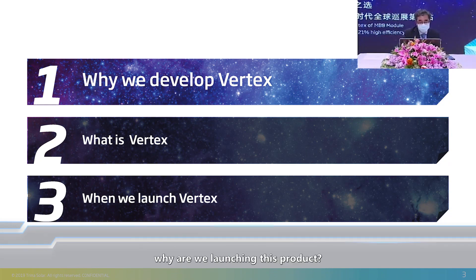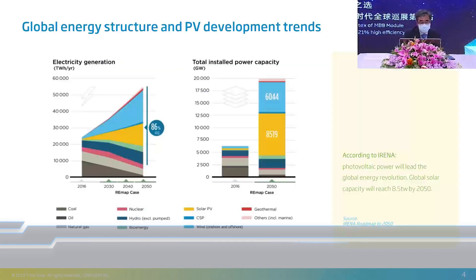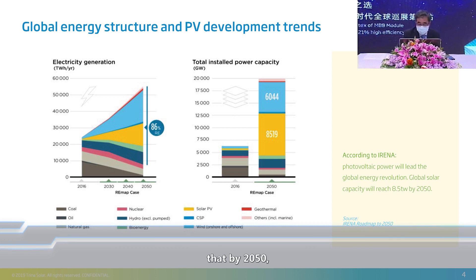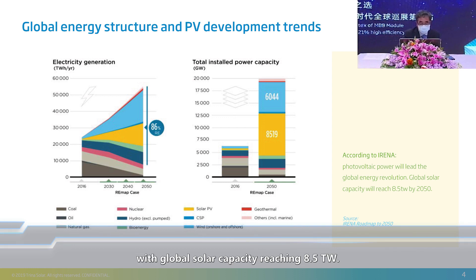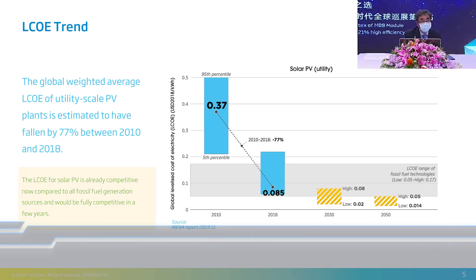First of all, why are we launching this product? Let's start by looking at the overall trends in the energy industry to see the global energy mix and trends in photovoltaic development. It is estimated by the International Renewable Energy Agency that by 2050, PV will become the main source of power generation, with global solar capacity reaching 8.5 terawatts. The figure shows that this will be a huge market by 2050.